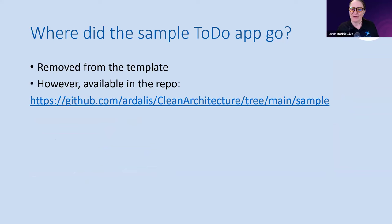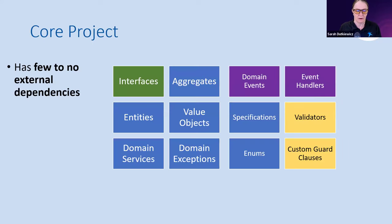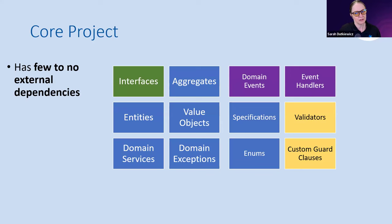Where did the sample to-do app go? It's still there — it's in the sample folder in the GitHub repo. When you do `dotnet new clean-arch`, you won't get that sample as part of the template. It's in the GitHub repo and I'll show you that. I'll also show what happens when I create a new template using Visual Studio Code. Core should have few to no external dependencies. Core does not link back to infrastructure, web, or use cases — but all three of those can know about core.